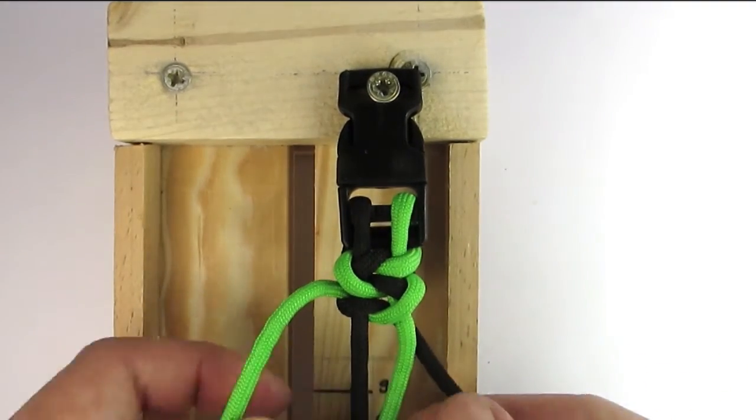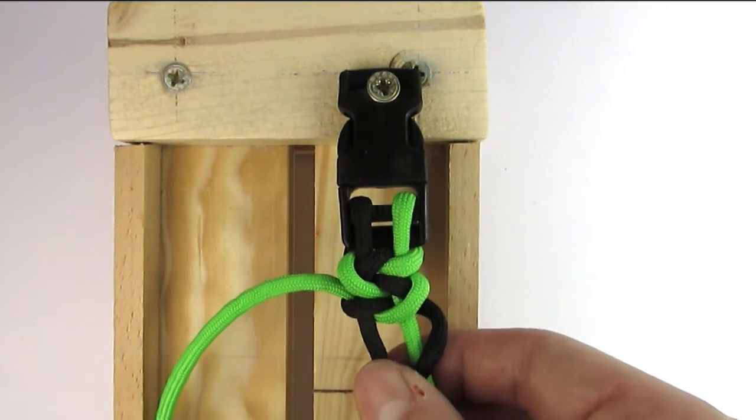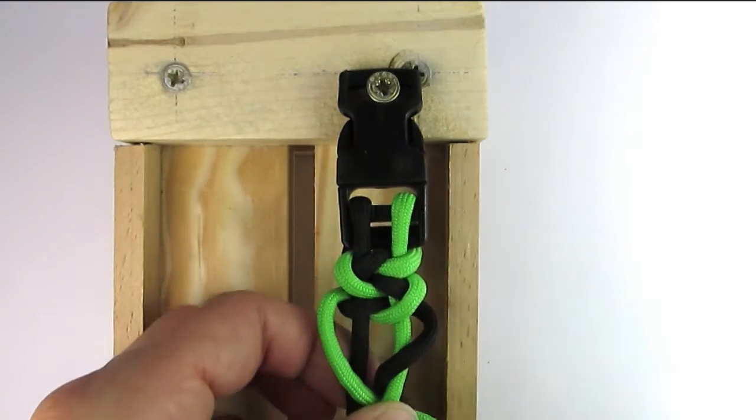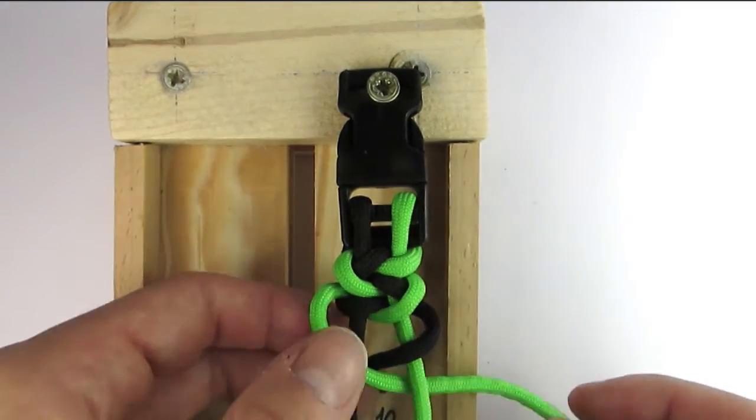As you can see the sequence is extremely simple. We basically feed the first color through the middle, then the second one, and then the second color also passes through the loop that was made by the first cord.